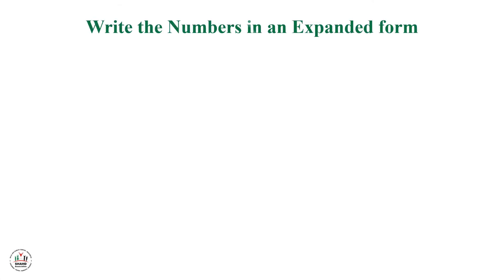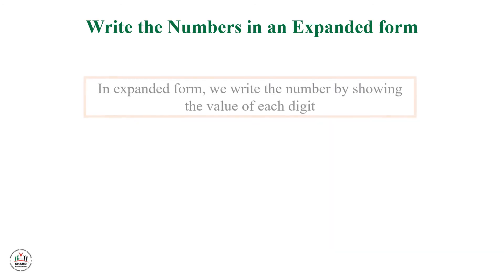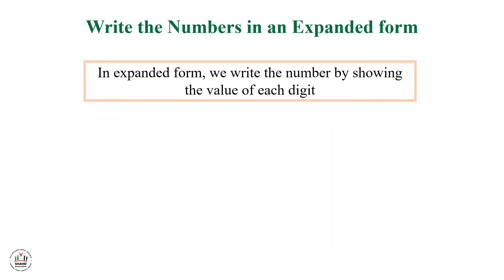Write the numbers in expanded form. In expanded form, we write the number by showing the value of each digit. First example: 278. The hundreds digit is 2, so I will write 200. The number of tens is 7, or we can say 70, so I will write plus 70. And the number of ones here is 8, so I will write plus 8.